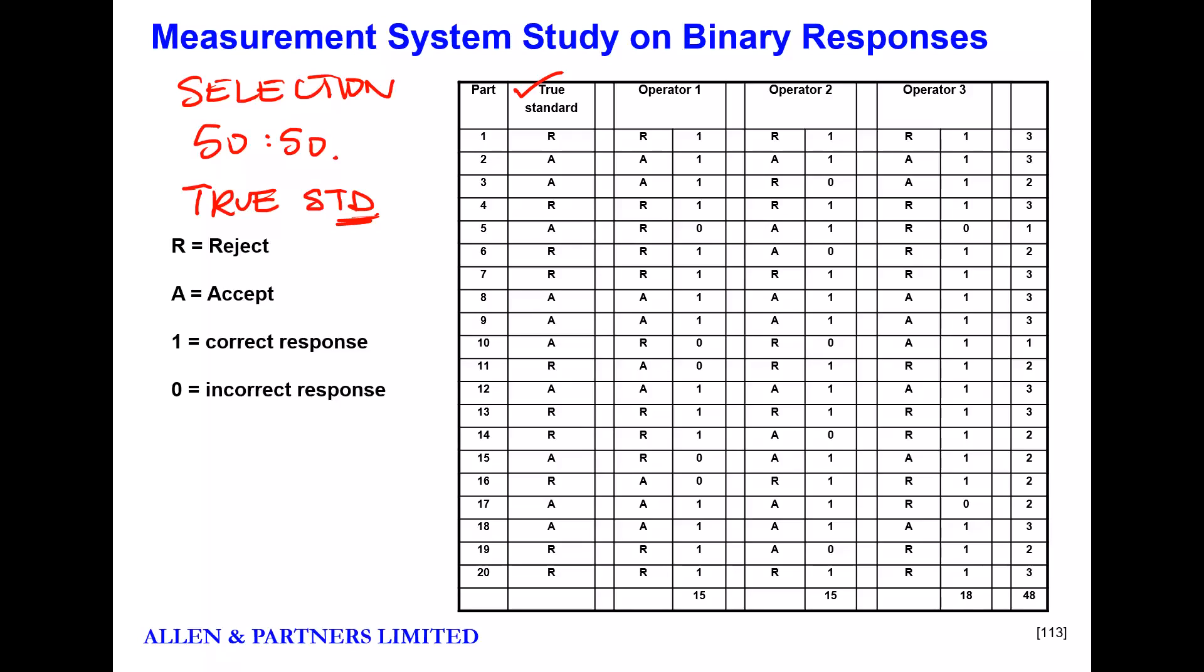Then what we're going to do is hold up the piece to each operator, or indeed a system - it could be a piece of equipment making this judgment. We are going to let the equipment or the measurement system make a judgment. If the judgment agrees - true standard was a reject, operator identified it as a reject - very simple, give them a score of one. The software is going to do this for you; all you've actually got to type in is the R's and the A's in the table. If the assessment is incorrect, the measurement system gets zero.